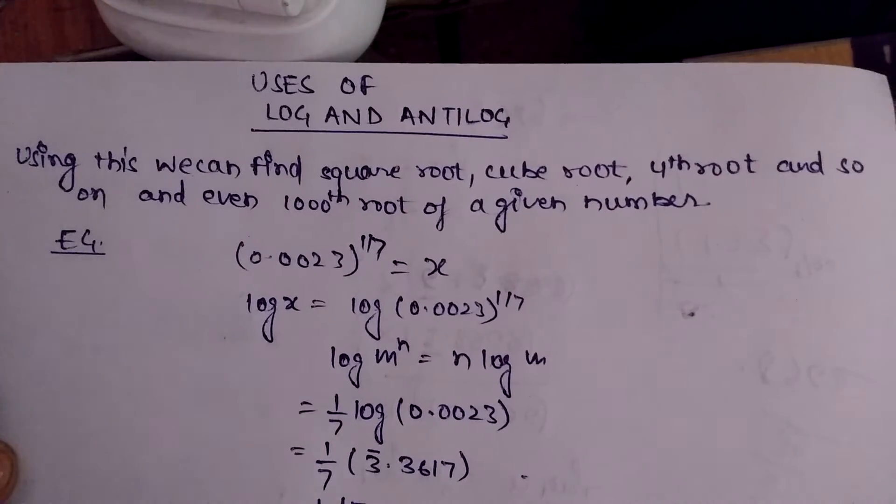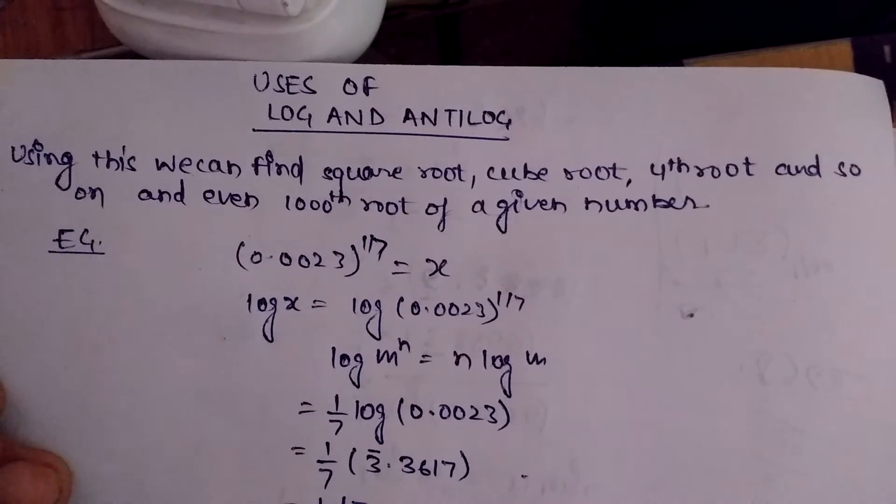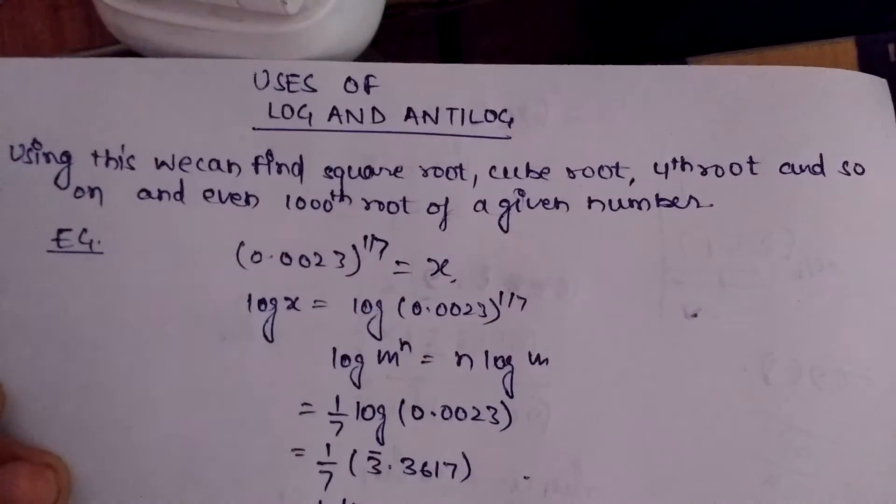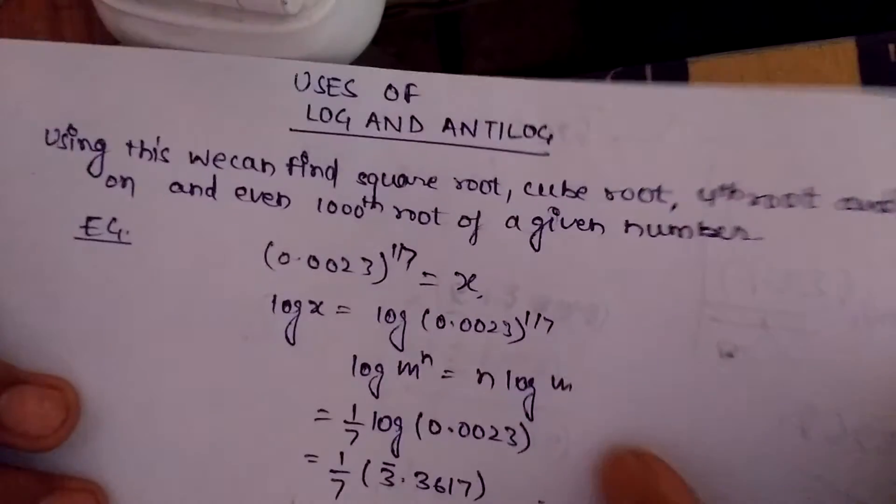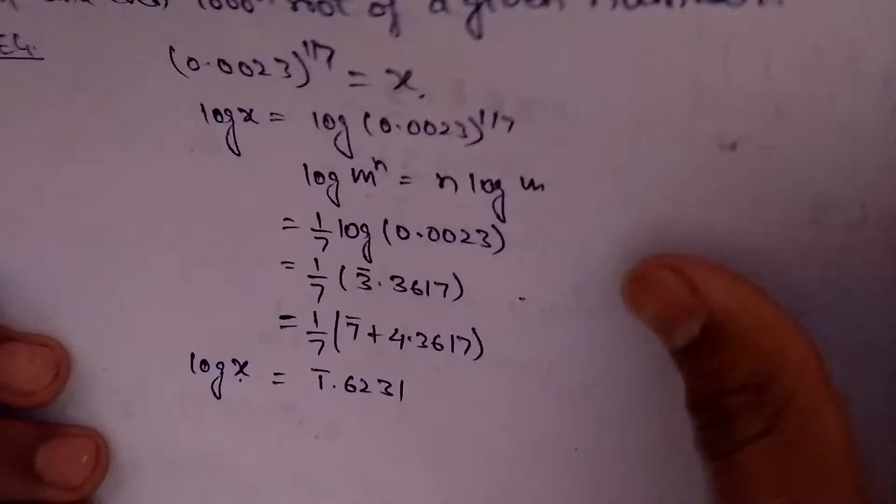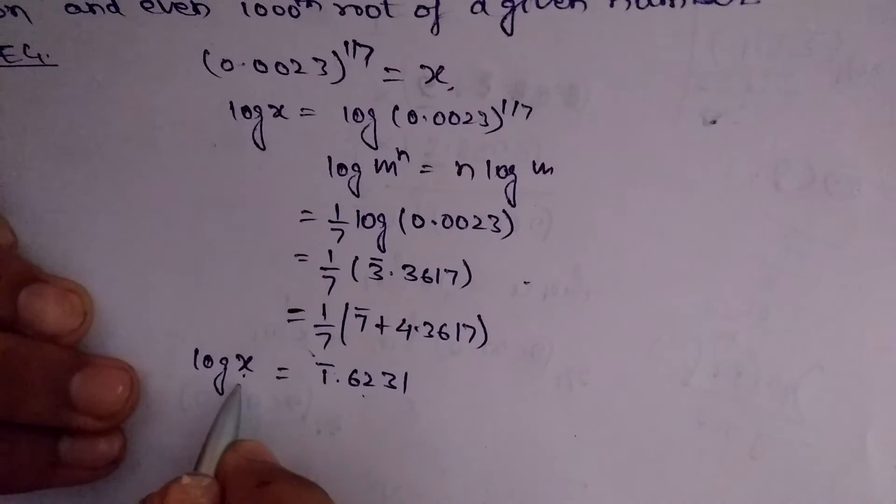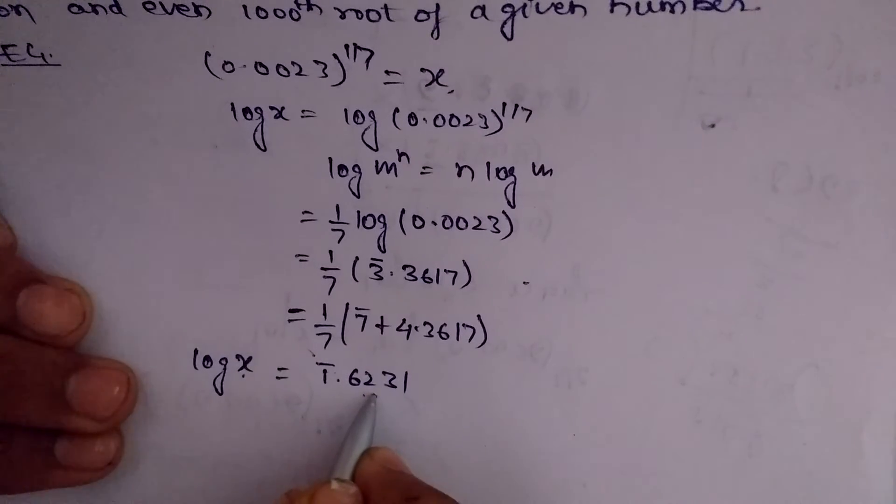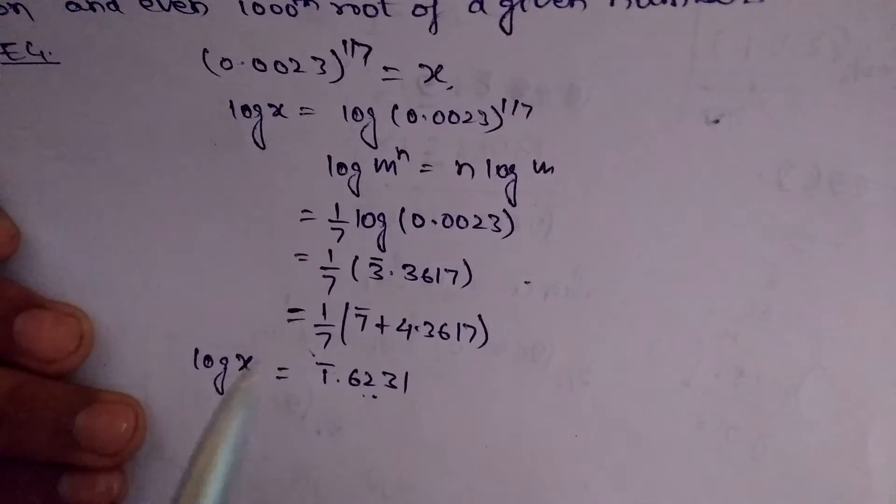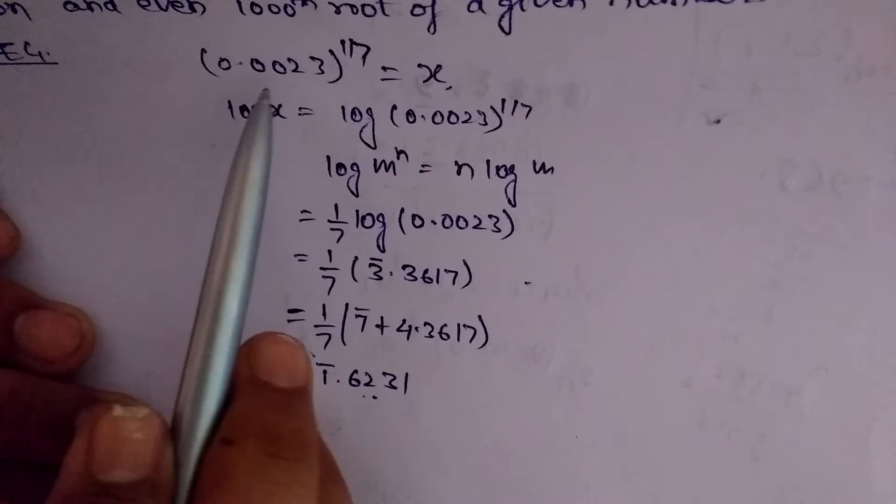Now for getting the value of x, as it is the seventh root of this number - sorry for not displaying these numbers - these are the numbers. So for getting the value of x, which is the seventh root of this given number, we will take the antilog of both sides.